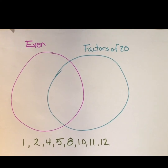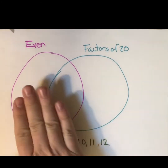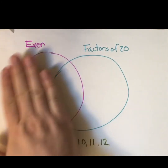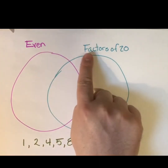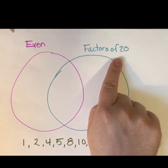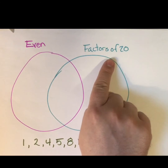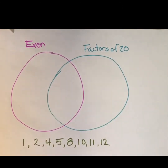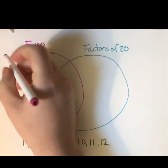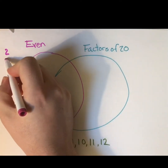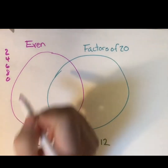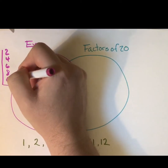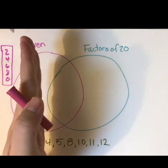For our next Venn diagram, I want to look at a set of numbers which I have down here. I've got two circles again. In the pink or purple circle I'm going to put even numbers. Even numbers are numbers that end in two, four, six, eight, or zero.